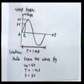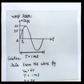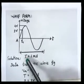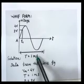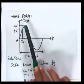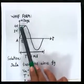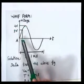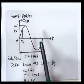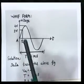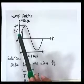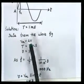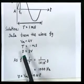The waveform given in the data shows that the time period T = 1 millisecond, the maximum value of voltage is 4 volt, and 3 volt is specified at a particular instant t1. From this waveform you can determine the time period, maximum value, and instantaneous value. So the data from the figure is: Vm = 4 V, T = 1 ms, and instantaneous voltage = 3 V.